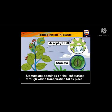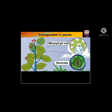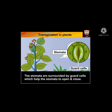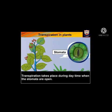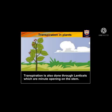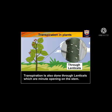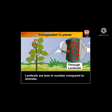Stomata are openings on the leaf surface through which transpiration takes place. The stomata are surrounded by guard cells which help the stomata to open and close. Transpiration takes place during daytime when the stomata are open.